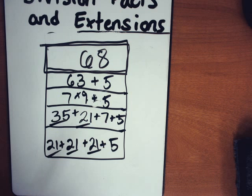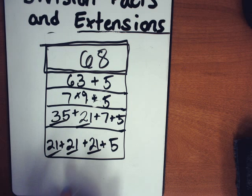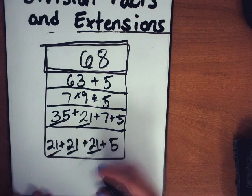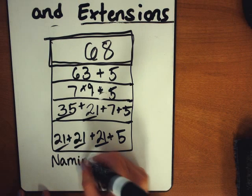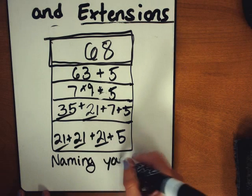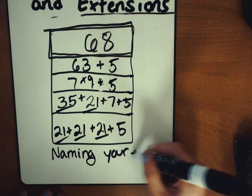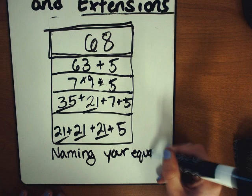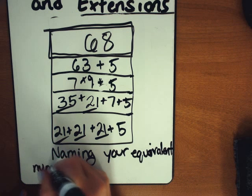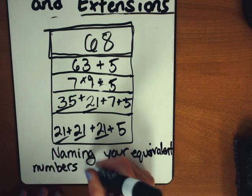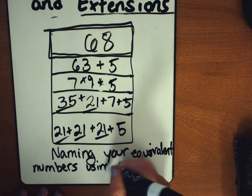So I'm going to write another number. I want you to get another name collection box ready. And I want you to concentrate on naming your numbers, your equivalent numbers, using multiples of other numbers.